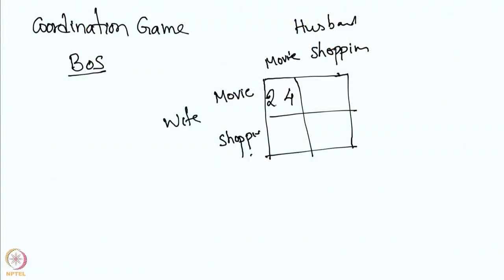The most important thing is that the benefit they get only when they go together. When both go to the movie, the husband gets 4 and the wife gets 2. When both go to shopping, it is also 4 and 2. The other cases can be assigned zeros. So the sum of the payoffs is not zero — this is an example of a non-zero sum game.